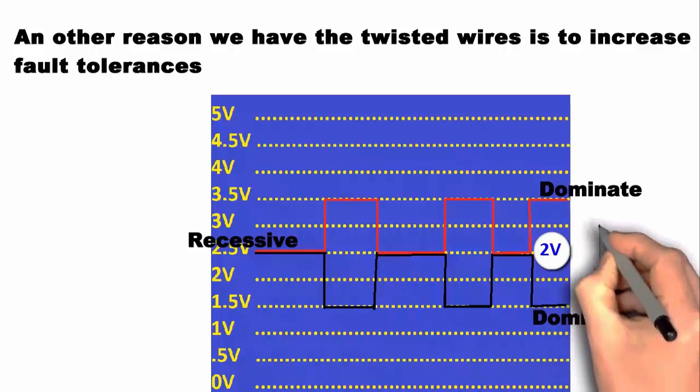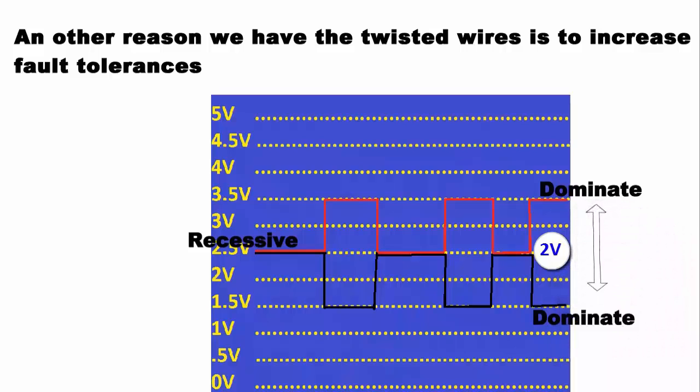So, do not turn off just yet because I will go over and I will make sure you understand this. Now, think about this. We have 5 volts which is divided between two lines and the idle, or as we know it in bus language, the recessive,